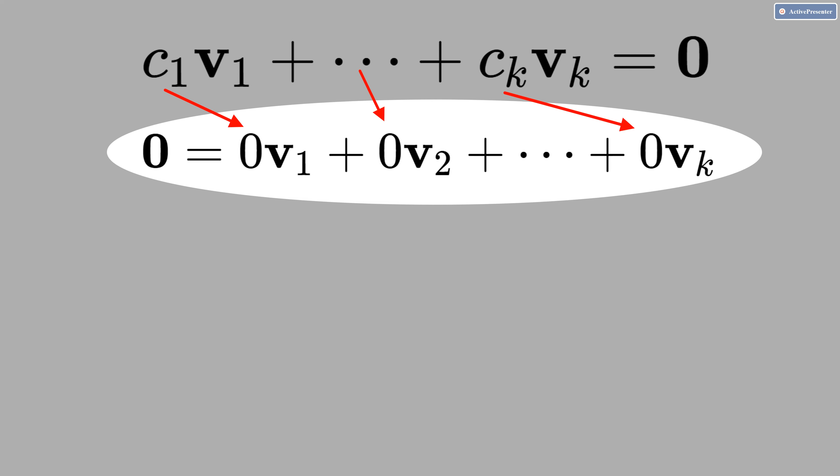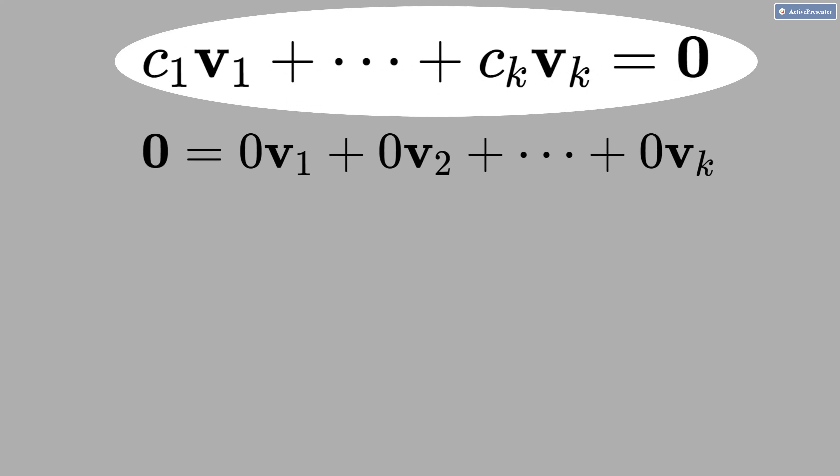All c's equal zero. Let's assume that c1 is not zero, can be any number. In this case, you can write v1 as a linear combination of other vectors. That means the vectors are dependent in this case.